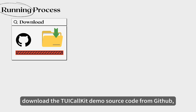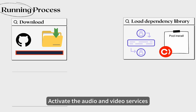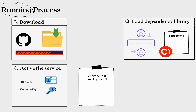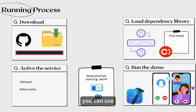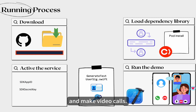First, download the TUI CallKit demo source code from GitHub, then load the dependency library. Activate the audio and video services to obtain the SDK app ID and SDK secret key. After filling these two parameters into the file, you can use Xcode to install the app on your phone and make video calls.